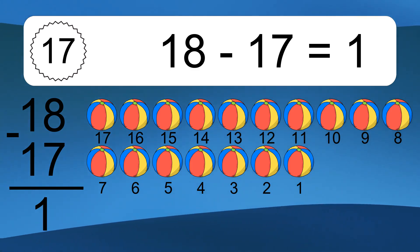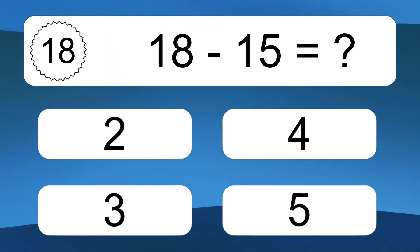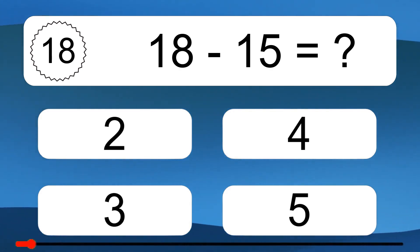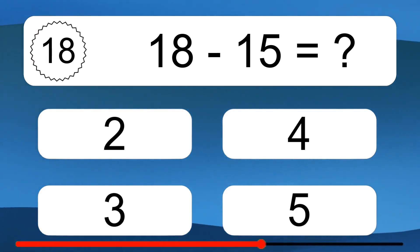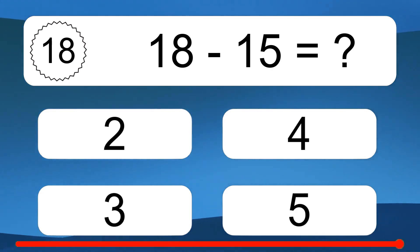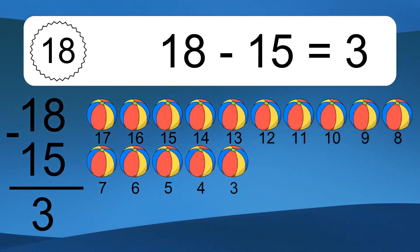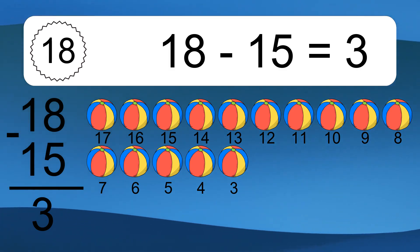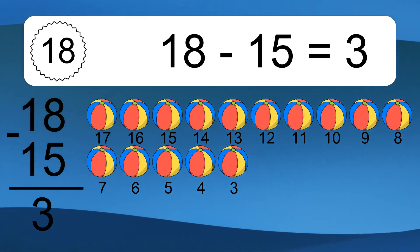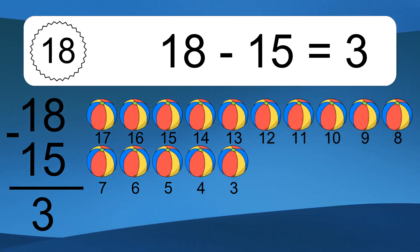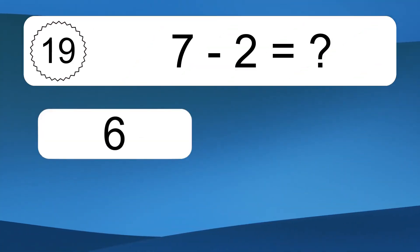18 minus 15 equals what? 18 minus 15 equals 3. Let's count it: 17, 16, 15, 14, 13, 12, 11, 10, 9, 8, 7, 6, 5, 4, 3.